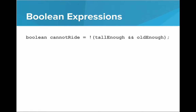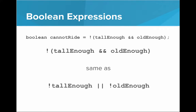Let's say you're at the amusement park, and you're waiting in line, and you look up at the sign and it says that you cannot ride if it's not the case that you are tall enough and old enough. So I can't ride if I'm not both tall enough and old enough — isn't that the same thing as saying I can't ride if either I'm not tall enough or I'm not old enough? These are equivalent statements.